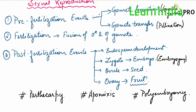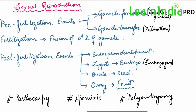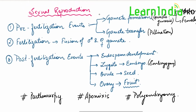So, our strategy for this chapter will be: first we'll discuss pre-fertilization events — gamete formation, starting with male then female, then gamete transfer. Then we'll discuss fertilization, followed by all post-fertilization events. Finally we'll discuss parthenocarpy, apomixis, and polyembryony. Stay tuned with Learn India Pro — we will proceed with the male reproductive part in the next video.